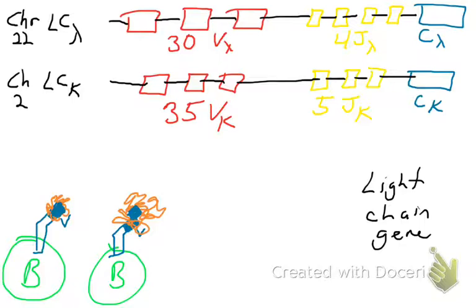Importantly, there are no D or diversity gene segments in the light-chain genes. On chromosome 2, the light-chain kappa gene has about 35 variable gene segments and about five joining gene segments, followed by the constant gene segment.